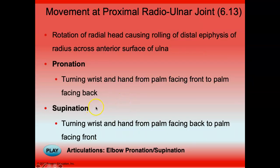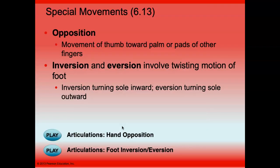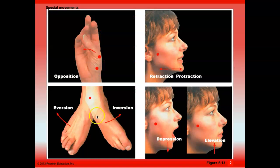If you hold your hand with palms upward — like carrying a bowl of soup — that is supination. Palms downward is pronation. Opposition is the movement exclusive to humans where the thumb can move to touch the other fingers. You can also move the sole of the foot inward, called inversion, or outward, called eversion.